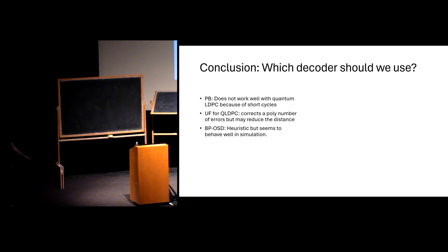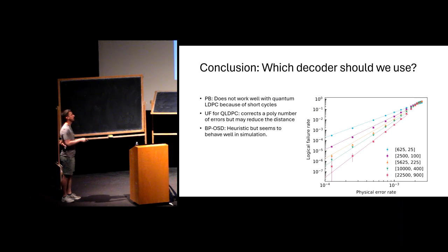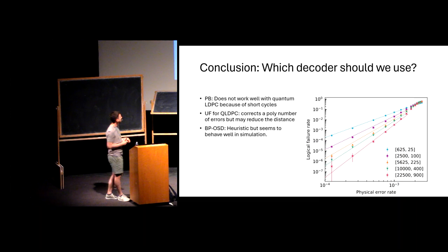I'll leave you with this question: we have several decoders, each with issues. BP doesn't work because of short cycles. The union-find decoder doesn't achieve the full distance and doesn't always perform well numerically. BP-OSD works well in practice but is heuristic and has n^3 complexity. Which one do you pick? For the numerical plots we showed, we actually used BP-OSD because it works well and has some fault tolerance structure by nature. I'll summarize how we put everything together in the next lecture.